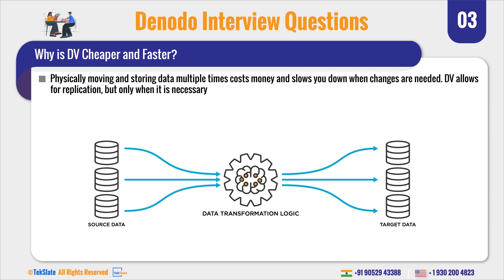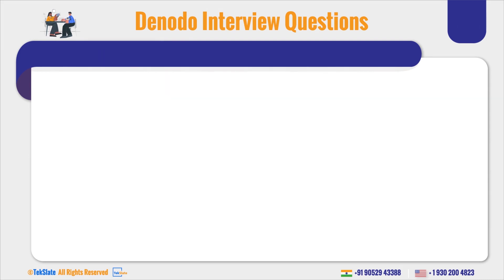DV allows for replication, but only when it is necessary. Replication means copying the data from one place to another place. In this way, DV is cheaper and faster.